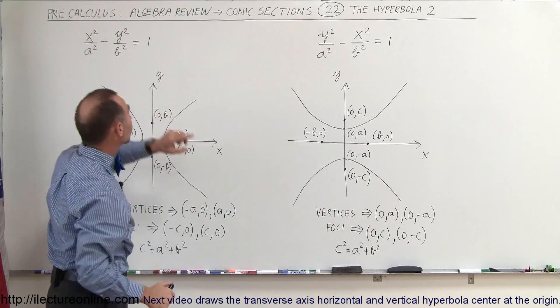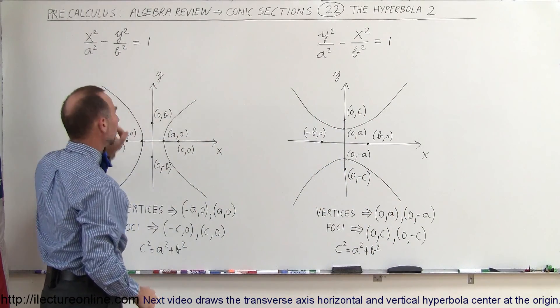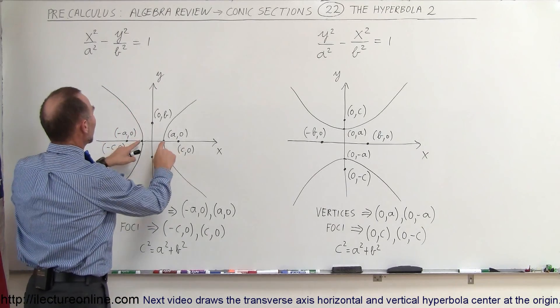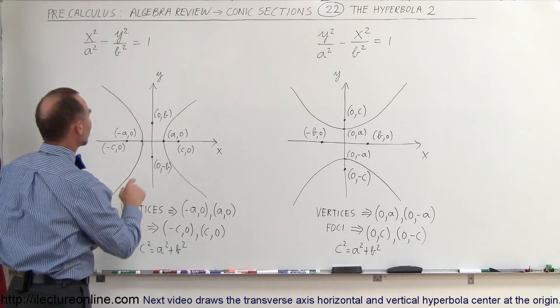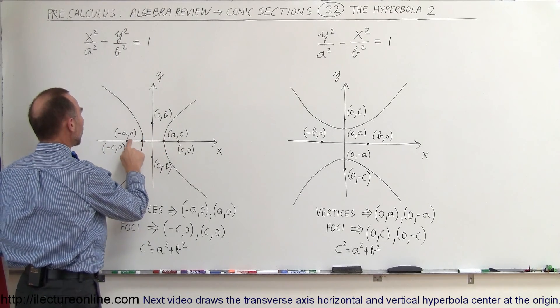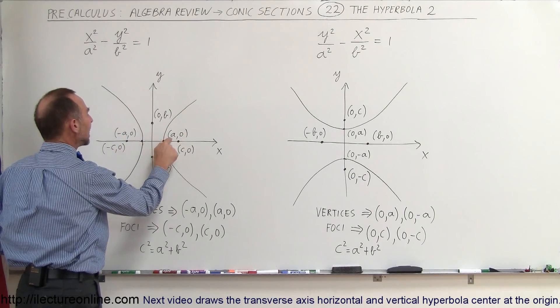Notice we did not change the constants A and B. A is the constant that is associated with the vertices. So you can see here that in this case, the vertex is defined as the point at minus A, 0 and at A, 0.